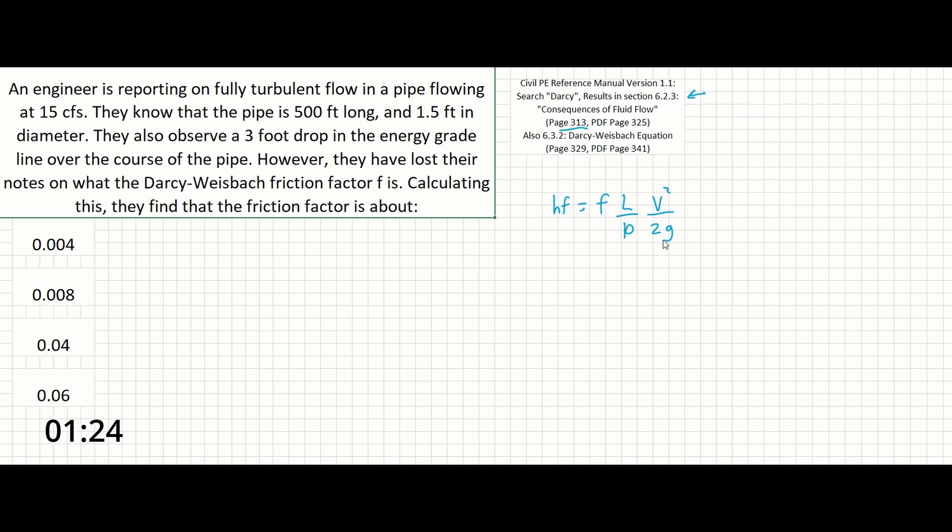We can immediately start filling out some terms in this equation. We have a 3-foot drop in the energy grade line, so that's our HF: 3 feet. We're solving for the friction factor, so we don't have that yet. We know that L is 500 feet and D is 1.5 feet. We do not have velocity yet. And 32.2 feet per second squared is our gravitational acceleration—a good value to have memorized.